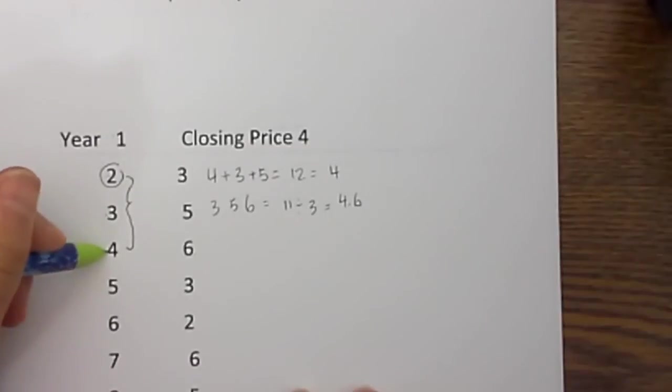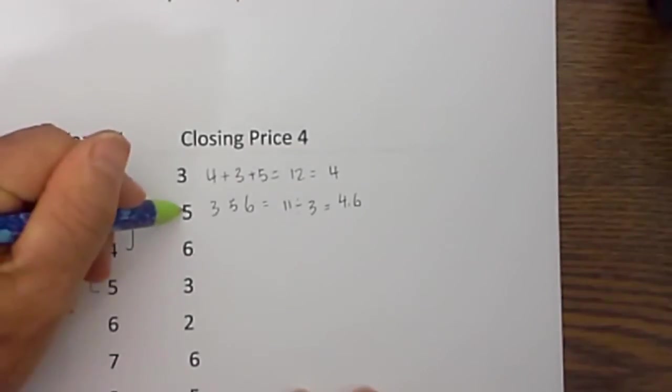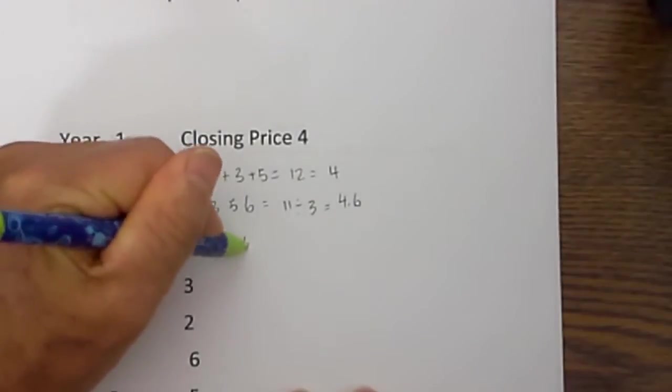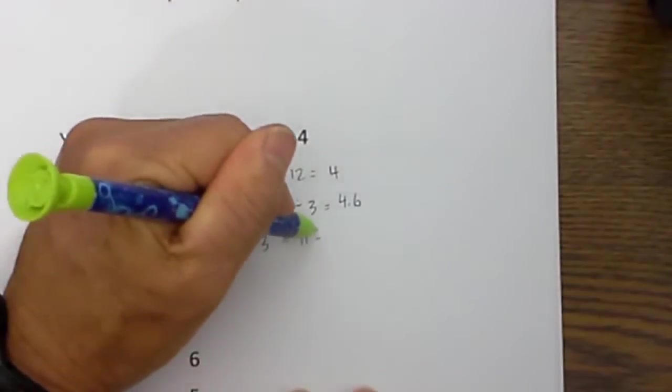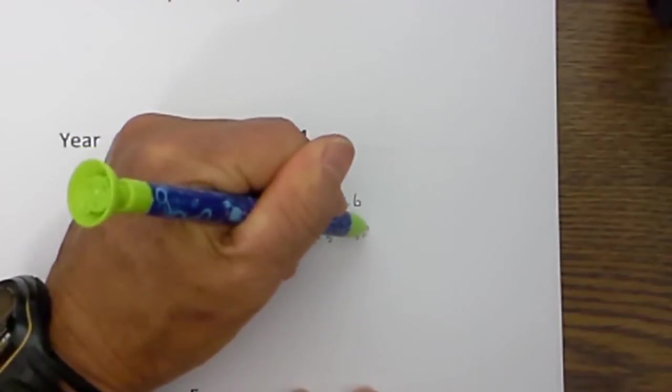Now for year 4 I will use these 3 numbers: 5, 6, and 3. That is also 11 divided by 3, which is 4.6.